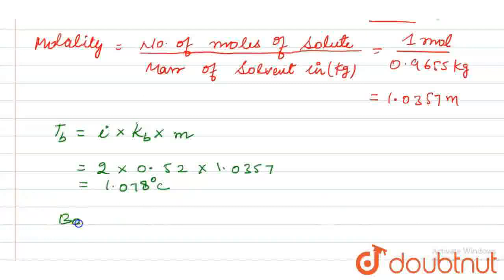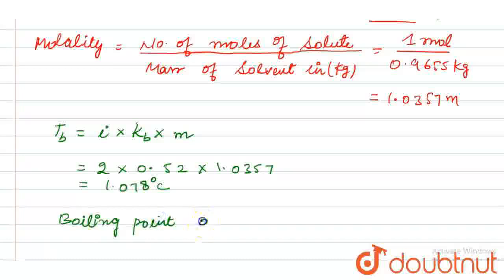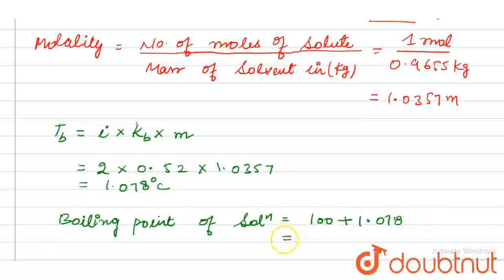Therefore, the boiling point of the solution is 100 plus 1.078, which equals 101.078 degrees Celsius. So this is our answer for this question.